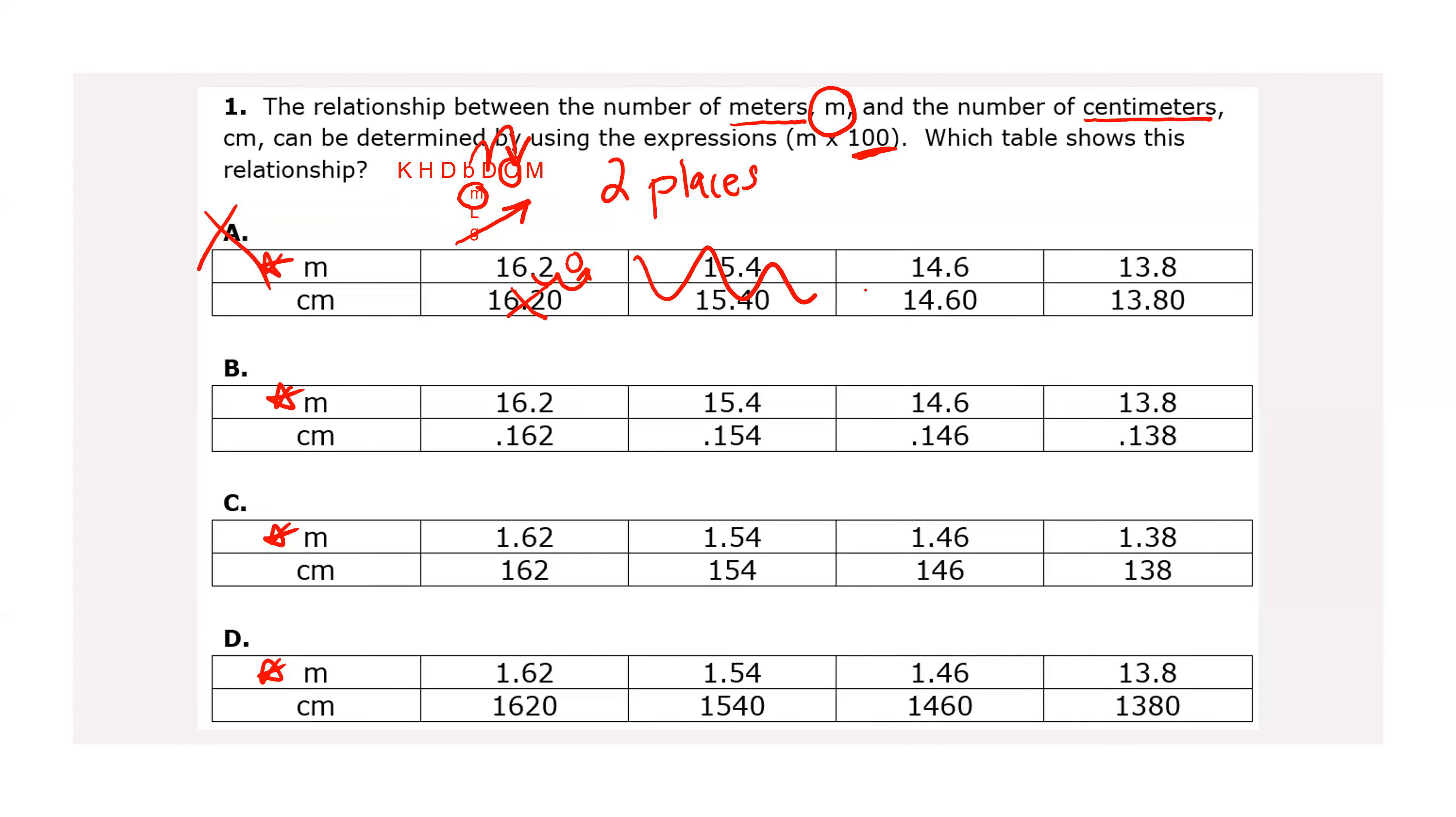So A is out. I don't have to look at the rest of this table because part of the table was already wrong, making that an incorrect answer. B, I'm starting with my meters because that's how I chose to do it on my King Henry letters. So I'm going to move my decimal point twice, two places to the right. So it's there in my number. I leave it there and then move it once, twice, and I get 1620.